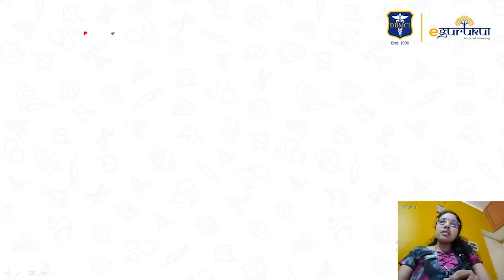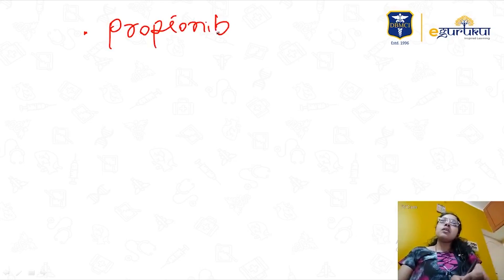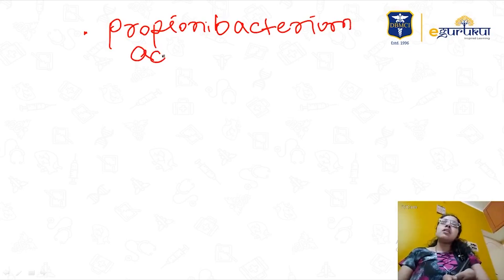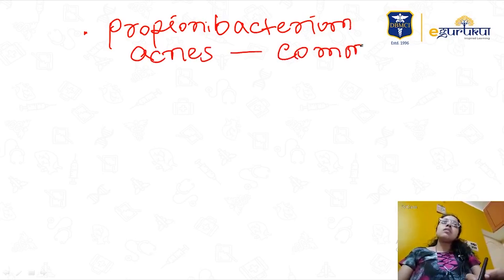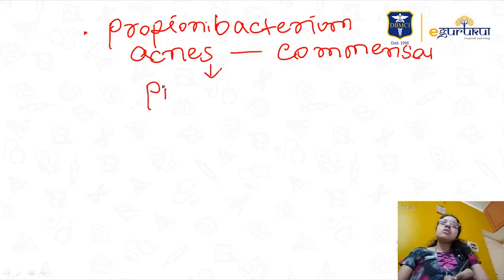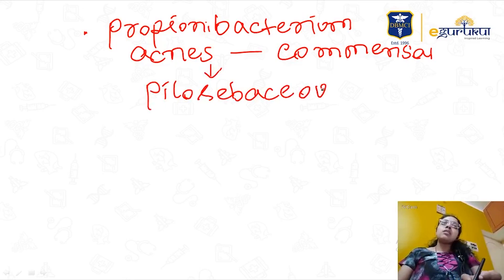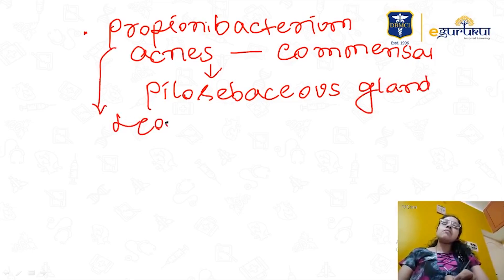One more important point: Propionibacterium acnes is a commensal found in the pilosebaceous gland. They can ask which organism is responsible for causing acne — Propionibacterium acnes can lead to development of acne. This organism you should remember.